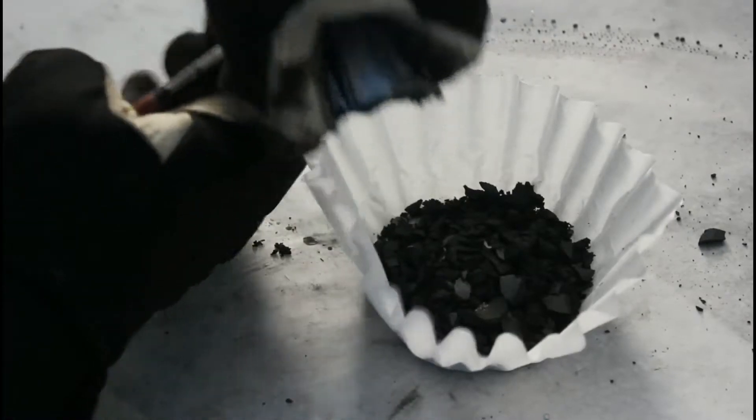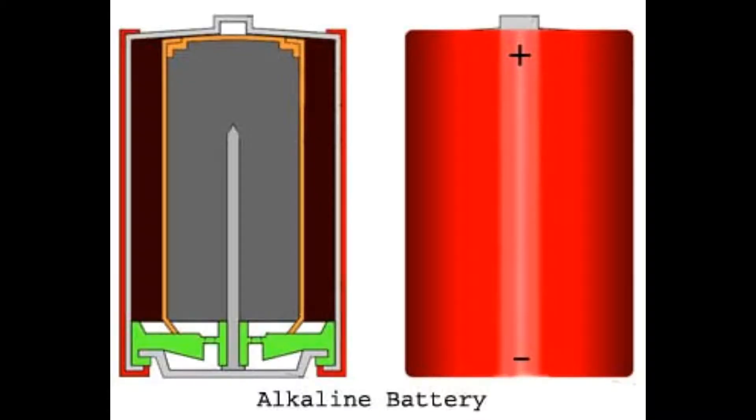First, let's look at how an alkaline battery works. In an alkaline battery there are four main components: the cathode, anode, electrode, and electrolyte.